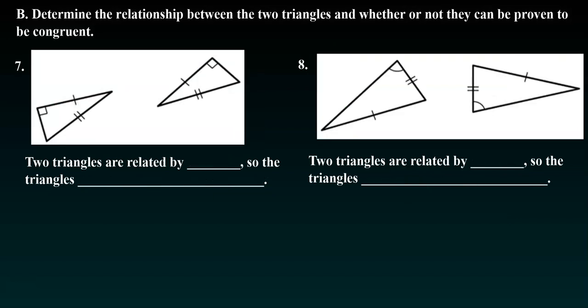So continuing on, we have a few more of these. So number seven, this time we have that whole SSA thing going on. We have this side and this side, we have this side and this side, and we have this right angle right here and this right angle.